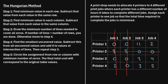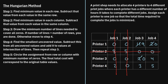Step four says: find the smallest uncovered value, subtract it from all uncovered values, and add it to the values at the intersection of the lines. Looking at the uncovered values, the smallest is two. We subtract two from all uncovered values — for example, 11 minus 2 becomes 9, 2 minus 2 becomes 0, and so on. Then we add 2 to intersection values: a 5 becomes 7, and an 8 becomes 10. We update the table with these new values.